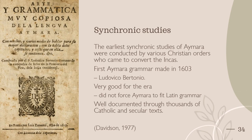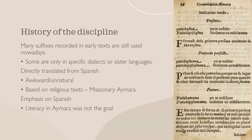As for synchronic studies, the earliest synchronic studies of Aymara were conducted after the era was conquered, when various Christian orders came to convert the Incas. The first Aymara grammar was made in 1603 by a Jesuit called Ludovico Bertonio. His grammar was very well done for the era, as he did not try to force it to fit Latin grammar, as was often the case. Thousands of Catholic and secular texts were created for the Aymara people, making the language well documented. However, the Aymara recorded in early texts is not the kind that would be spoken by native speakers, as it is largely just directly translated from Spanish, making it awkward and unnatural.